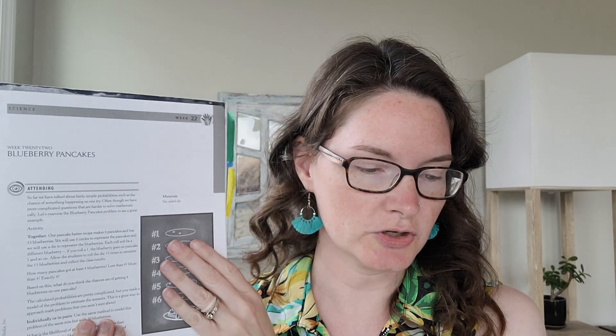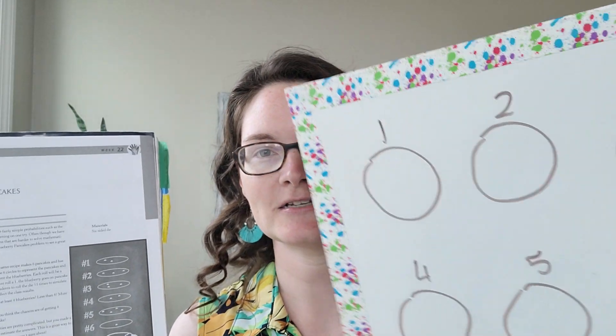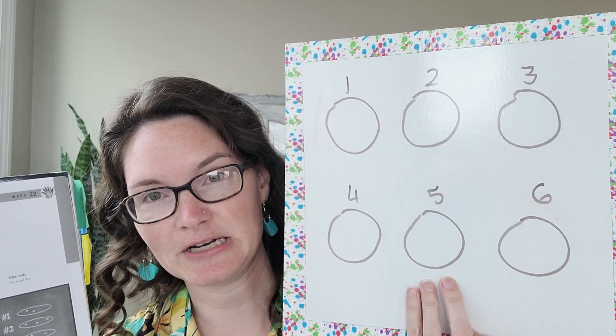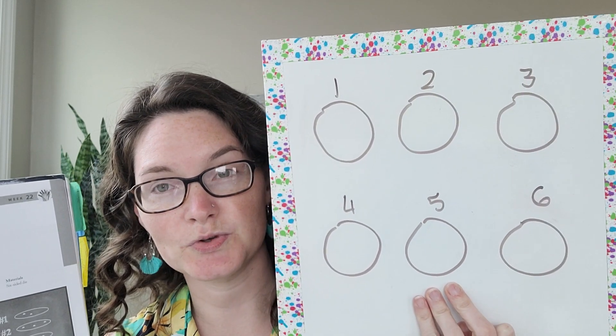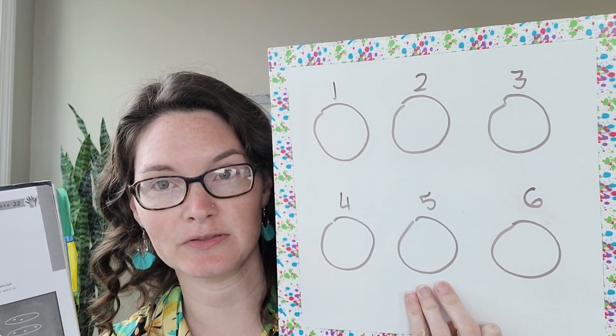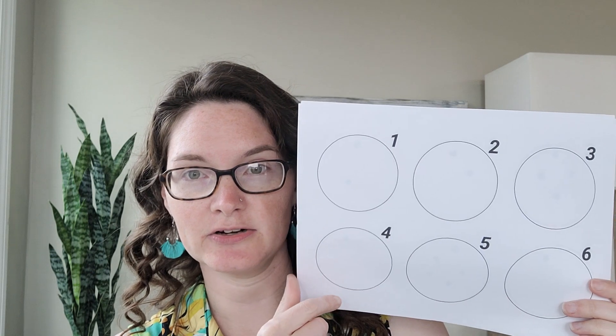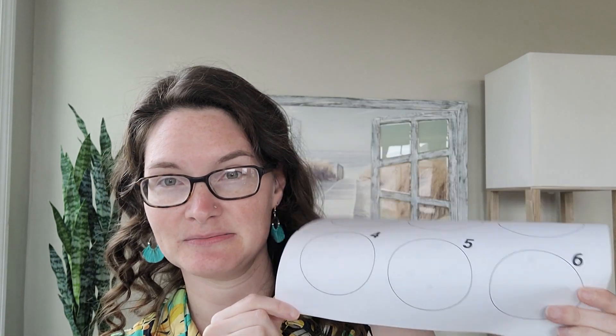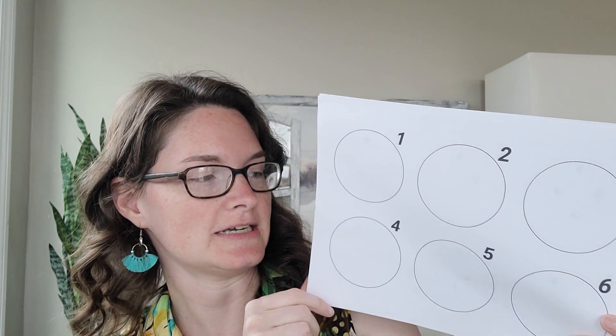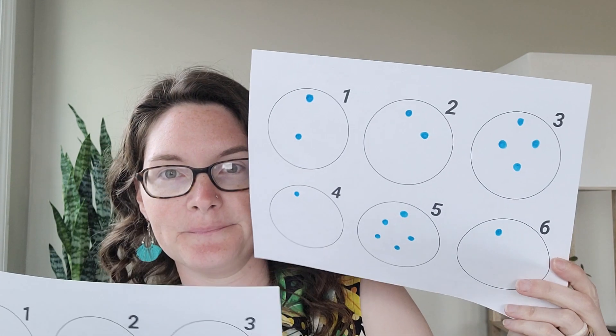You're going to need a whiteboard or pieces of paper. You can set up a whiteboard kind of like this for everyone to work off of. I just drew six circles and numbered them one through six. You're gonna need a die. You can make sheets like this or just draw out six circles and number them.